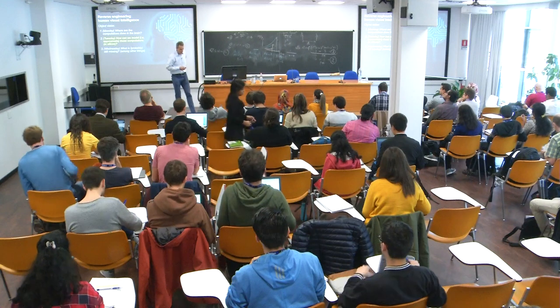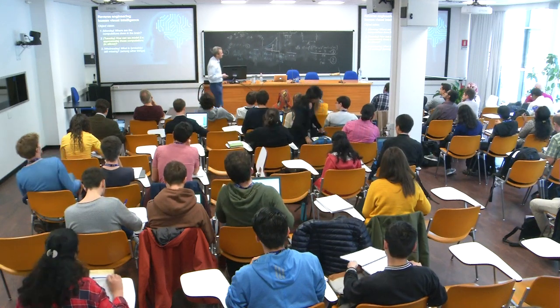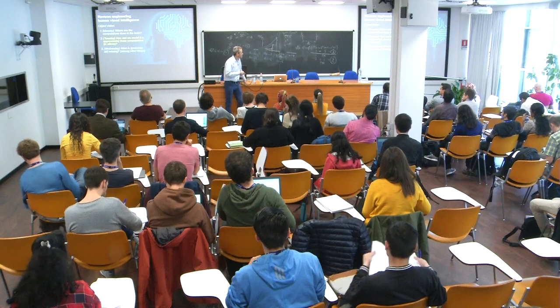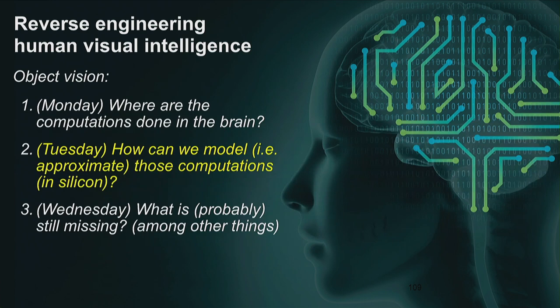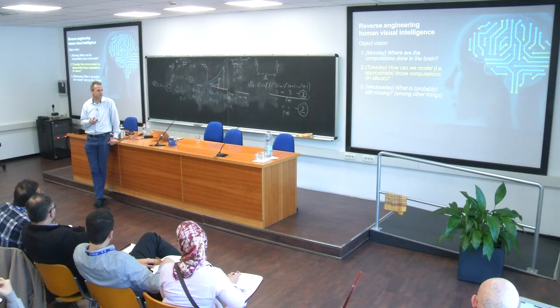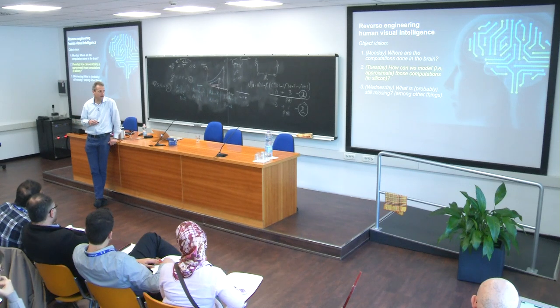I'm going to start by rewinding a bit, like I did yesterday. I gave you this overview of what I was going to cover in three lectures. I started on Monday reviewing areas of the brain involved in supporting visual object recognition and how neural activity relates to behavior — why I spent most of day one talking about IT Cortex and linear decodes. Yesterday I told you how deep neural networks can be used as approximate models of the ventral stream, and showed you evidence for why we think that's true.